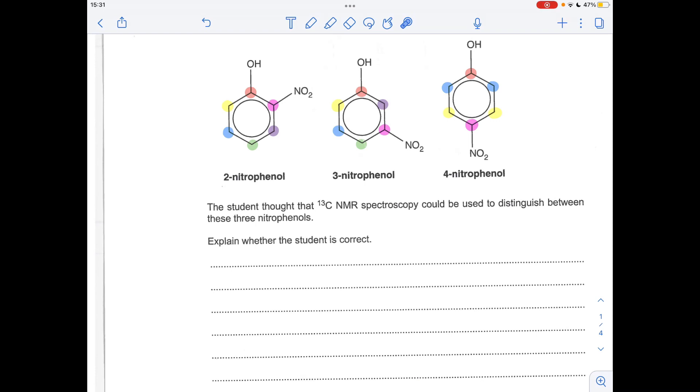2-nitrophenol, all of the carbons are different or have different environments so that's got six environments. 3-nitrophenol, again six environments because all the carbons are different, there's no symmetry in these two molecules. Whereas in 4-nitrophenol, obviously that's unique but these two carbons here are equivalent, these two are equivalent to each other, that's unique so there's four environments here.